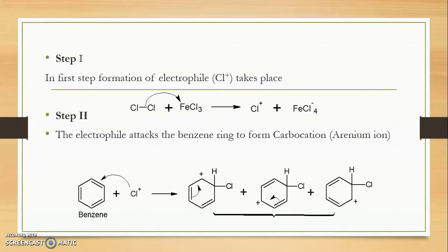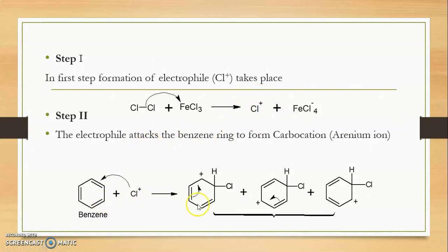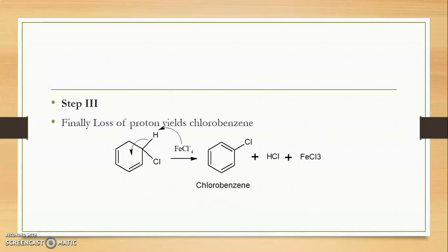Now we will see the specific mechanism for chlorination. Steps are the same — only the electrophile is replaced with chlorine. In the first step, Cl+ acts as the electrophile: ferric chloride breaks the bond in the Cl₂ molecule, forming Cl+ and FeCl₄−. In the second step, this electrophile attacks the benzene ring, forming three resonating structures. In the third step, the carbocation loses a proton, leading to formation of chlorobenzene.